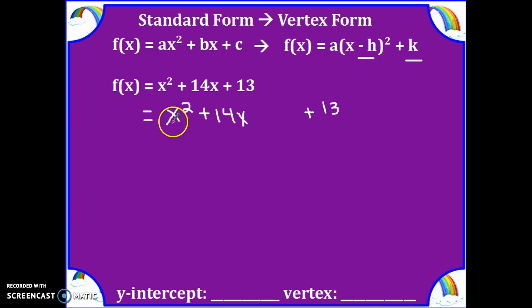The next thing we ask is, is the a a 1? In this case, it is. Now we can create a perfect square trinomial. We do that by taking half of the b term, divide it by 2, and then square it. So that is 7 squared, which gives us 49.